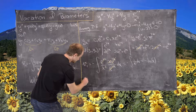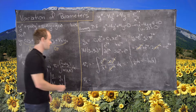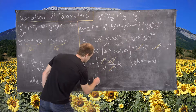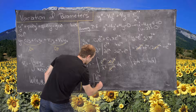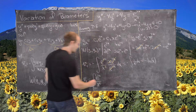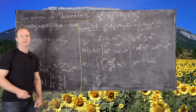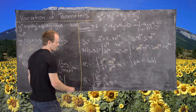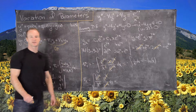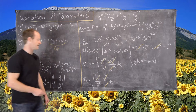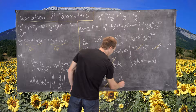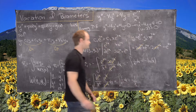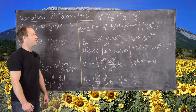Now let's calculate v2, which is the antiderivative of g of x times y1 over the Wronskian: that is e to the 2x over x squared times e to the 2x, divided by e to the 4x. The e to the 2x in the numerator cancels the e to the 4x in the denominator, leaving the antiderivative of 1 over x squared dx, whose antiderivative is minus 1 over x.